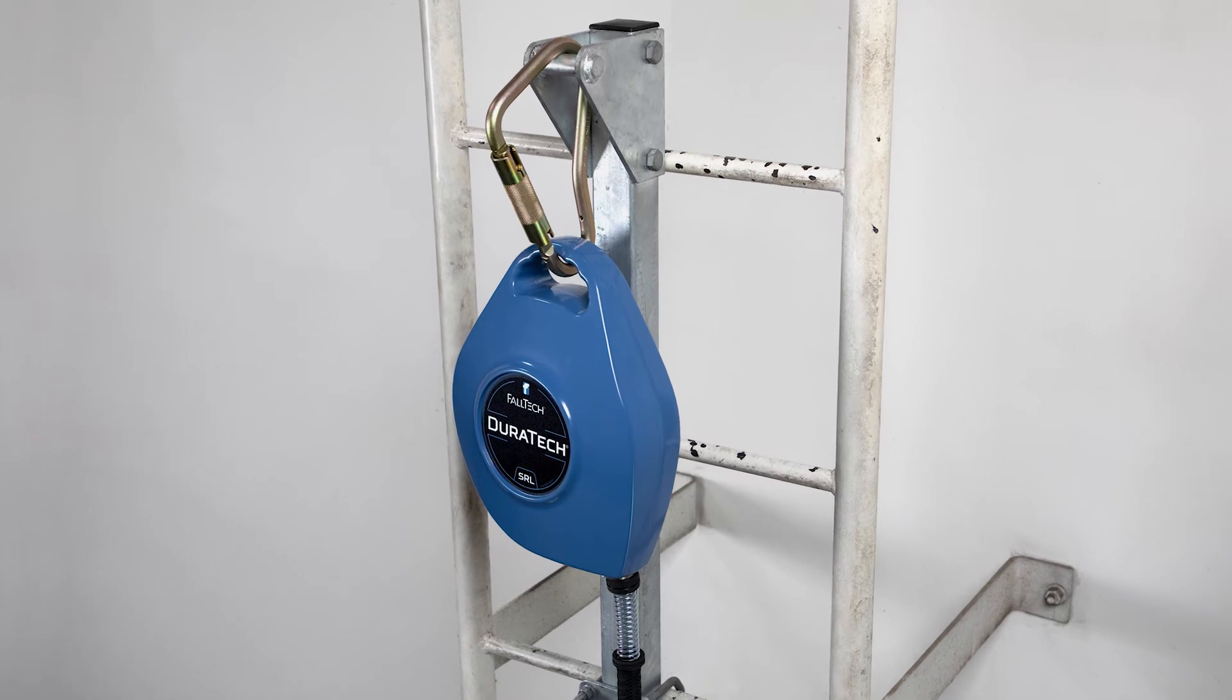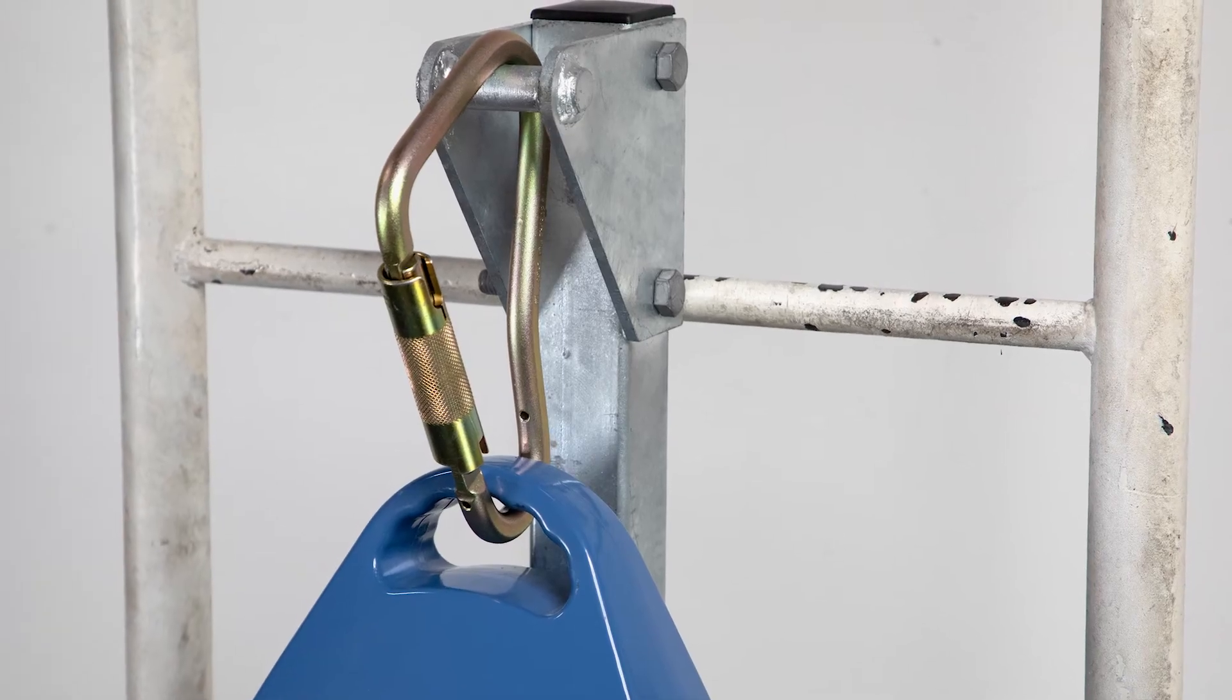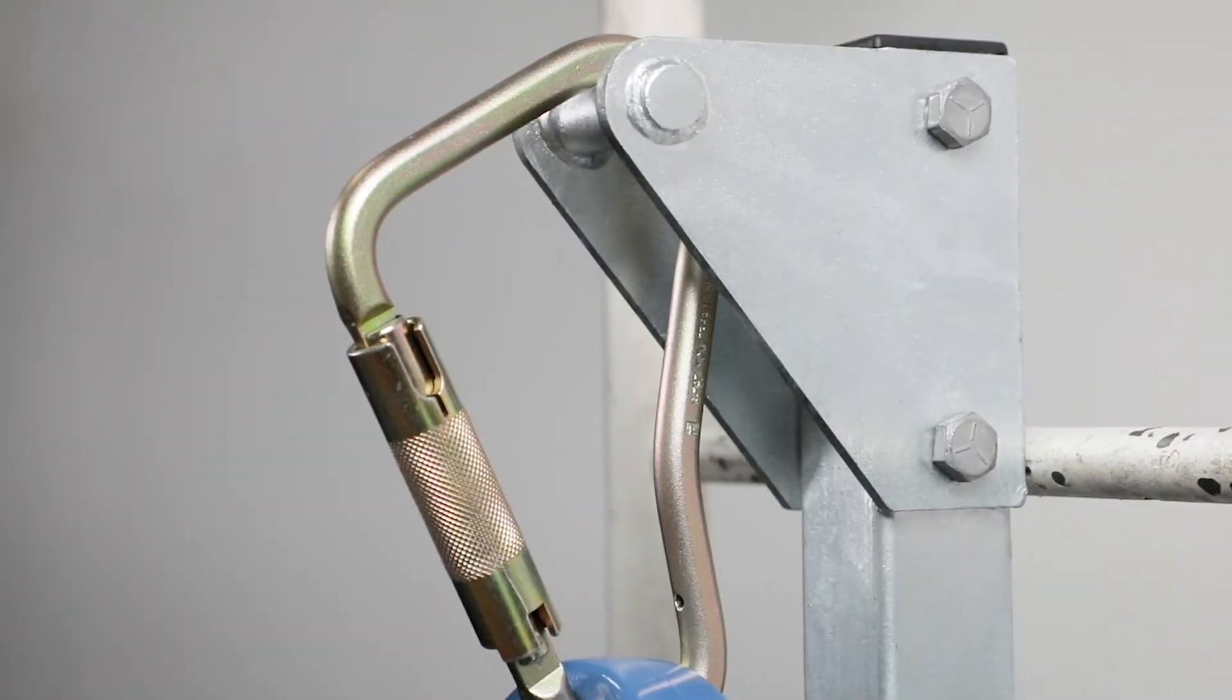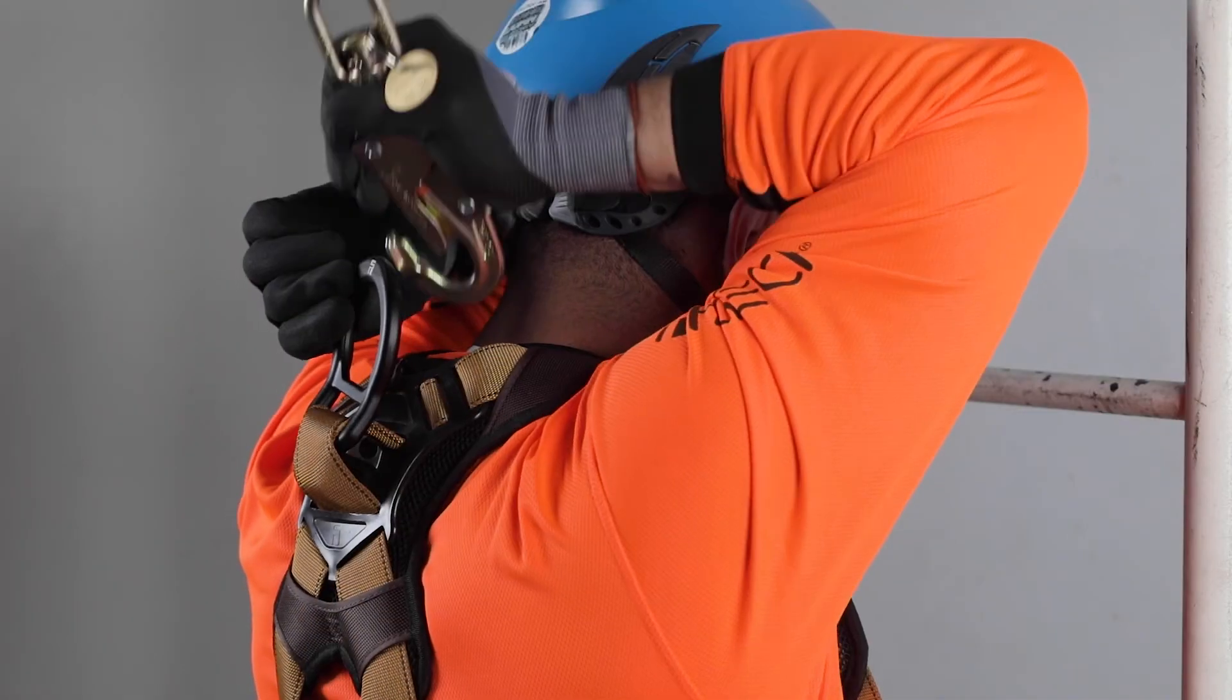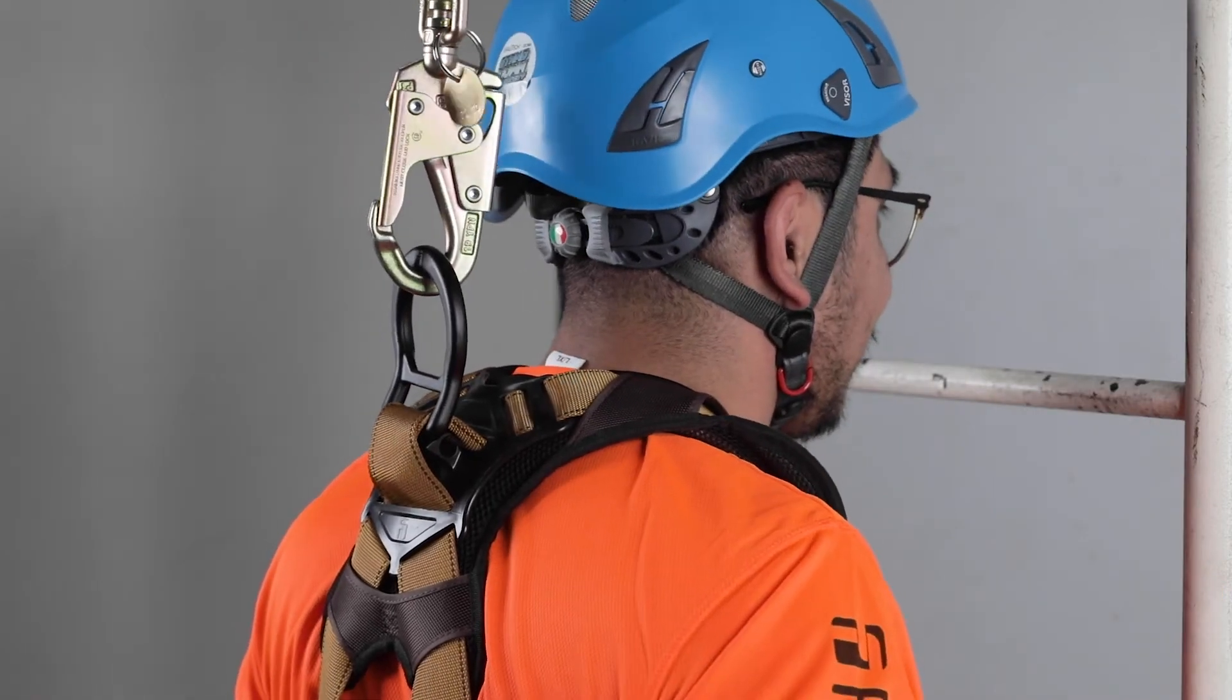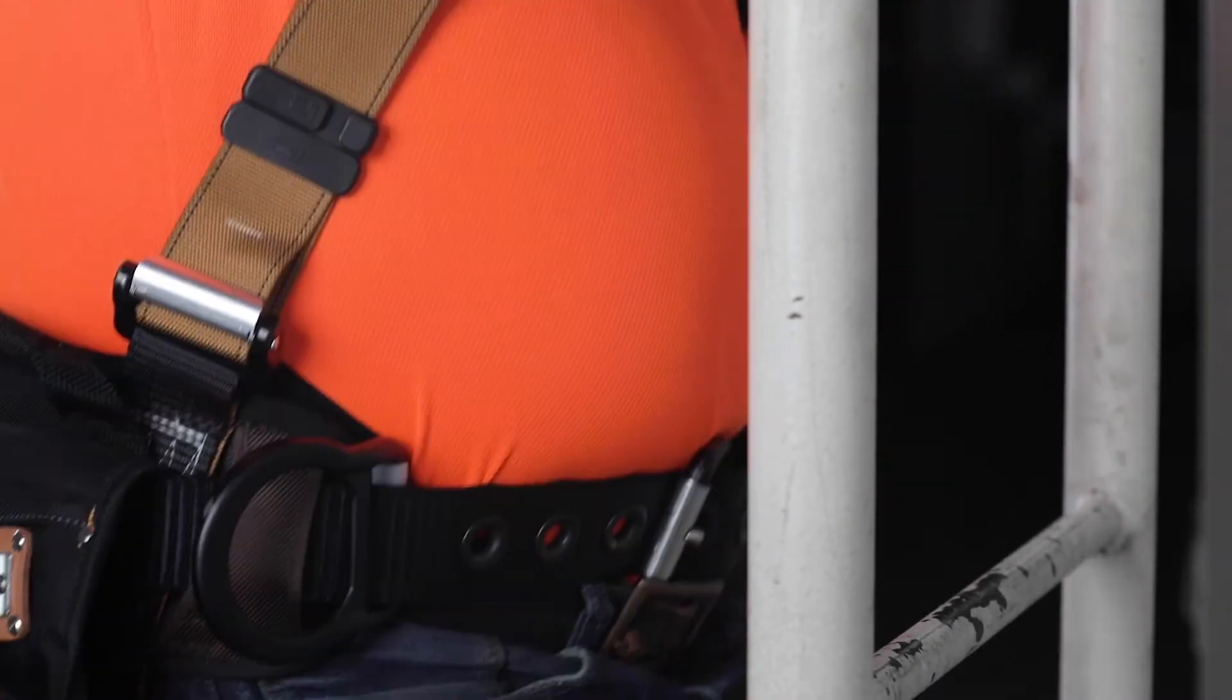Install compatible FALTEC SRL to attachment point using approved connector. Both 5' and 10' bolt-on ladder stanchion anchors are available with large and small offset top brackets. These provide added comfort by connecting to a harness's back dorsal D-ring or front sternal D-ring respectively.